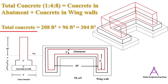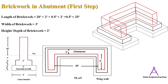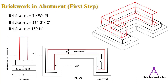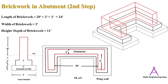The total 1:4:8 ratio concrete for the abutment and wing walls combined is 304 cubic feet. For the brickwork in the abutment in the first strip, the length is calculated as 20 + 2 + 0.5 + 2 + 0.5 = 25 feet. The width of the brickwork is three feet. The height or depth is 2 feet. Multiplying length × width × height gives the total quantity of brickwork in the first strip equal to 150 cubic feet.